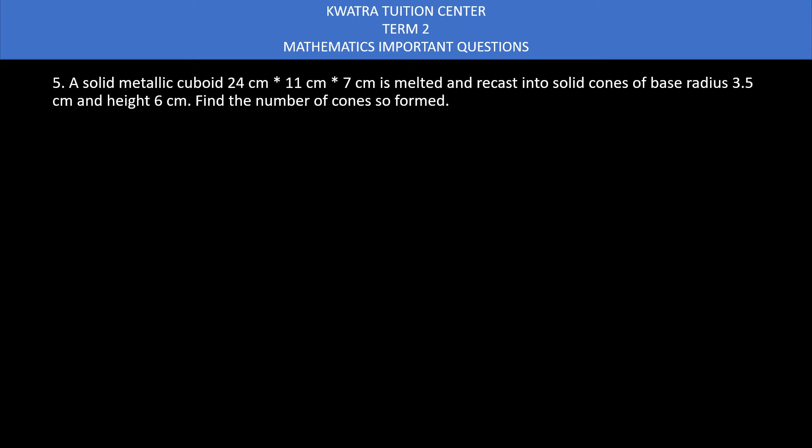Now moving to the fifth question. A solid metallic cuboid having dimensions 24 cm, 11 cm, 7 cm is melted and recast into solid cones of base radius 3.5 cm and height 6 cm. Find the number of cones so formed. We will put cuboid into solid cones, and we don't know how many. So volume of n cones equals volume of cuboid. n cones means n times volume of 1 cone, which is 1 by 3 pi r square h.